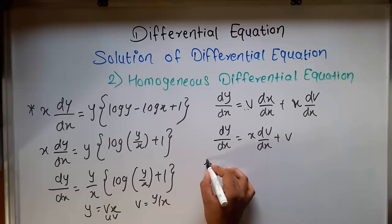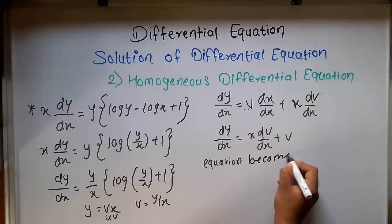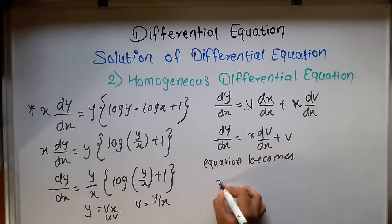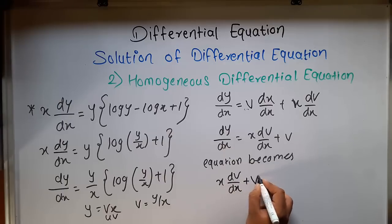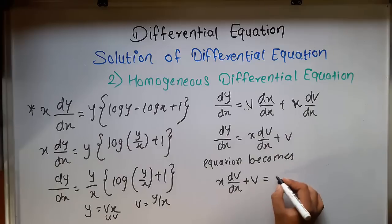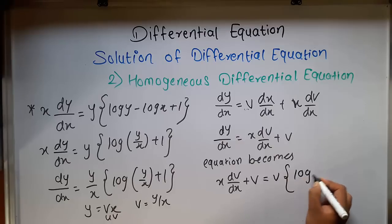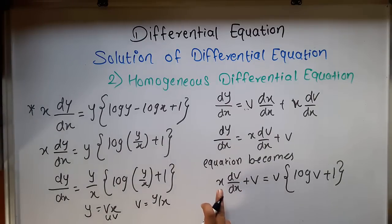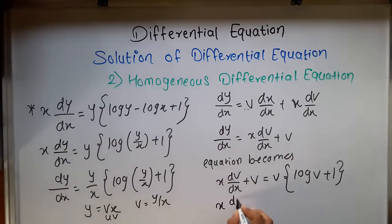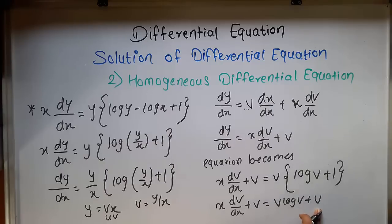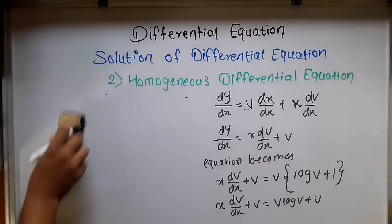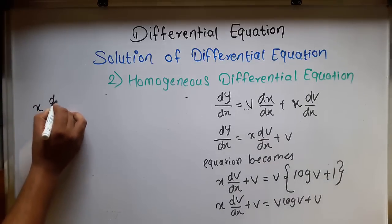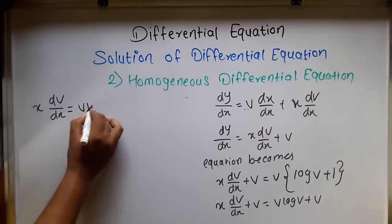So our equation becomes: x dv/dx plus v equal to v times (log v plus 1). Opening the bracket gives x dv/dx plus v equal to v log v plus v. The v on both sides cancels, so our equation becomes x dv/dx equal to v log v.